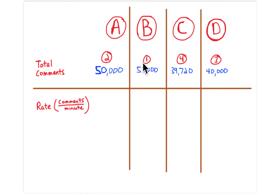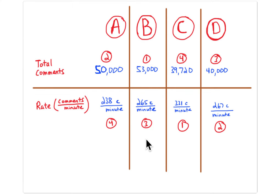Ordering by total number of comments, applicant B is first with the most and applicant C has the least. But when you look at the rate — who's checking comments the fastest — the order is different. The fastest is applicant C at 331 comments per minute, and the slowest is applicant A at 238 comments per minute, even though A checked more total comments overall.